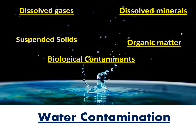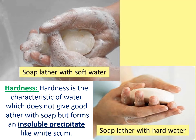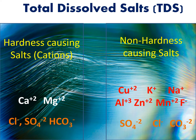Today's topic is hardness of water. What is hardness? Hardness is a characteristic of water — if water contains hardness, that water does not produce good lather when it interacts with soap. If soap gives good lather with the water, that water is called soft water. If soap does not produce good lather, but instead produces an insoluble precipitate like white scum, that water is called hard water.